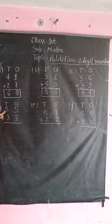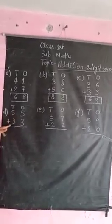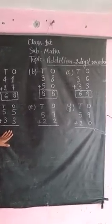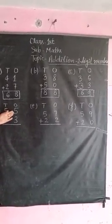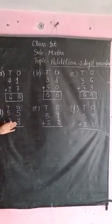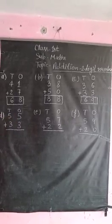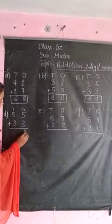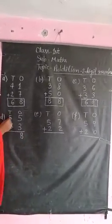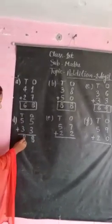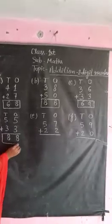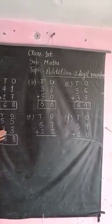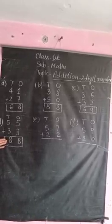Next, addition number is 55 plus 33. 55 plus 33. Addition is 5 plus 3 equals 8, 5 plus 3 equals 8. 55 plus 33 equals 88. Total number is 88.